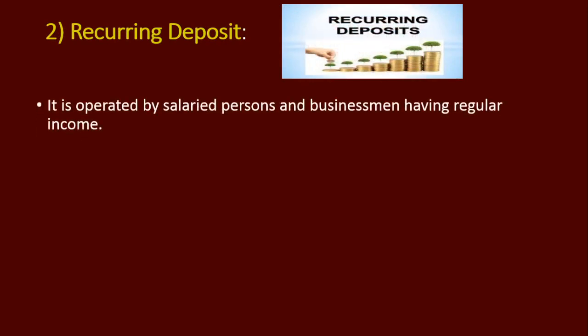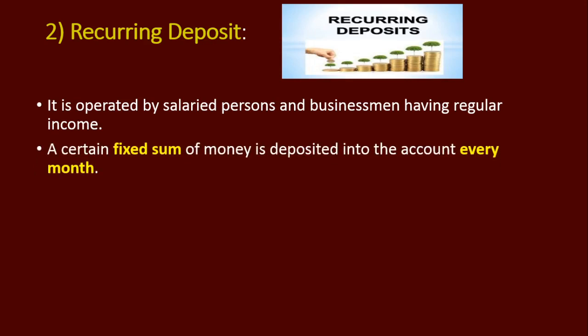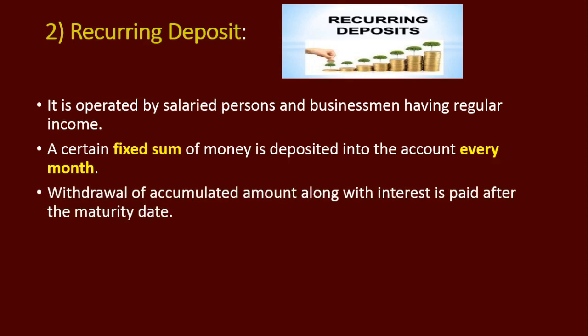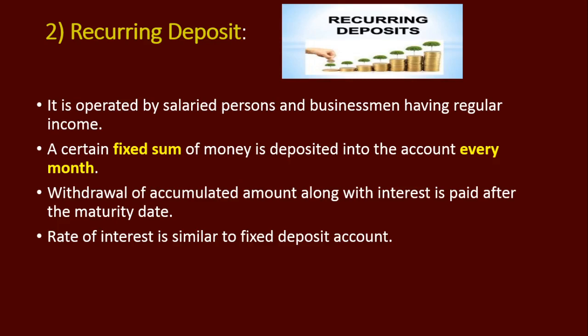The second type is recurring deposit. Recurring deposit is normally operated by salaried persons and businessmen having regular income. A fixed sum of money is deposited every month — for example, 500 rupees every month for 1 year in the recurring deposit account. Withdrawals along with the interest are paid after the maturity date. The interest rate is similar to the fixed deposit account.